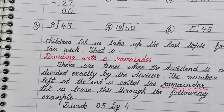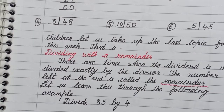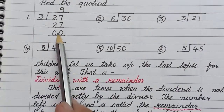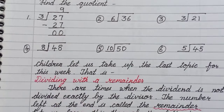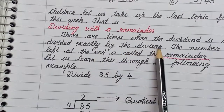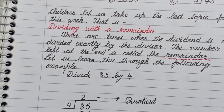Now children, let us take up the last topic for this week: dividing with a remainder. It is not necessary that your remainder is always 0. There are times when the dividend is not divided exactly by the divisor. The number left at the end is called the remainder. Let us learn this through the following example.